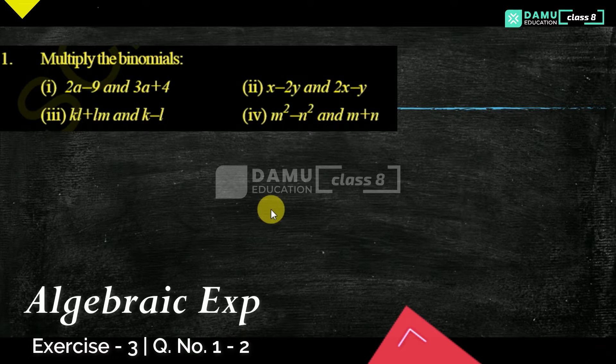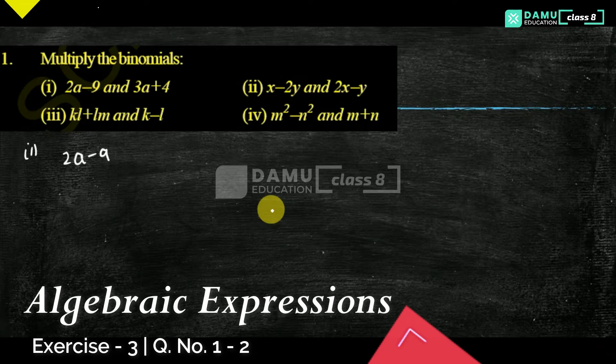So that is, the first one is: (2a - 9) into (3a + 4).